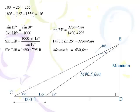So, let's find the height of the mountain. Well, notice there's a right triangle there on the right side. And this is similar to from the previous problem. We did law of sines to find part A. Now, we're going to use right triangle trigonometry to find part B. So, the mountain, the height of the mountain, is across from 25 degrees. The ski lift is the hypotenuse of that right triangle. So, the sine of 25 is opposite over hypotenuse. Mountain over 1,490.4795. Multiply both sides by the hypotenuse, and the mountain is 630 feet. And we did it again.